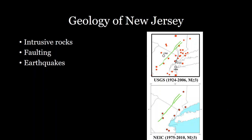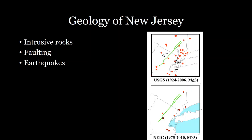This fault has created some earthquakes. New York and northern New Jersey are not completely earthquake free. These are all the earthquakes that have occurred in New Jersey since 1924 and since 1975 that are magnitude three or greater. They're not huge earthquakes by California standards, but earthquakes still happen because of this fault moving through New Jersey.